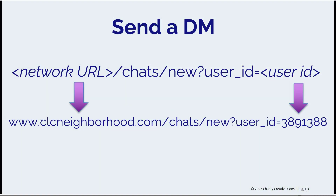To be able to add a hyperlink that sends someone who clicks it to a DM with you as a host — maybe you want to tell them if they have a question to send you a chat — you need to format the URL like this. You need your network URL like we looked at before, and then at the end you're going to add your user ID. You find your user ID by opening up your profile in your network and finding those numbers at the end.